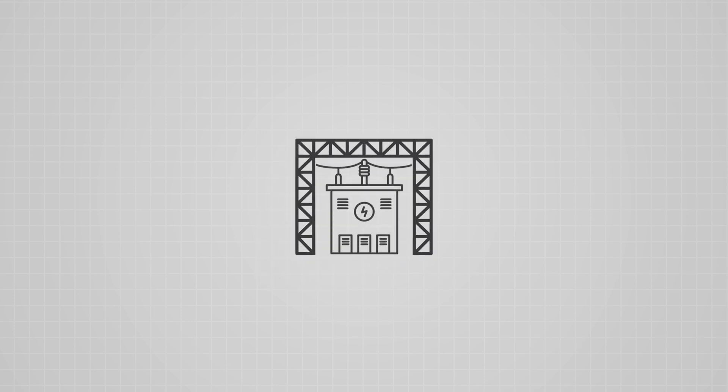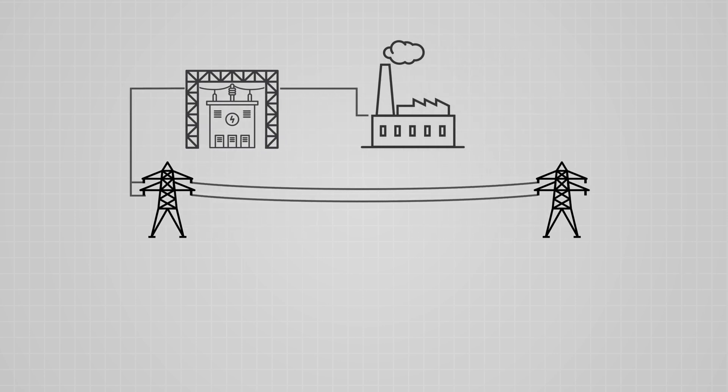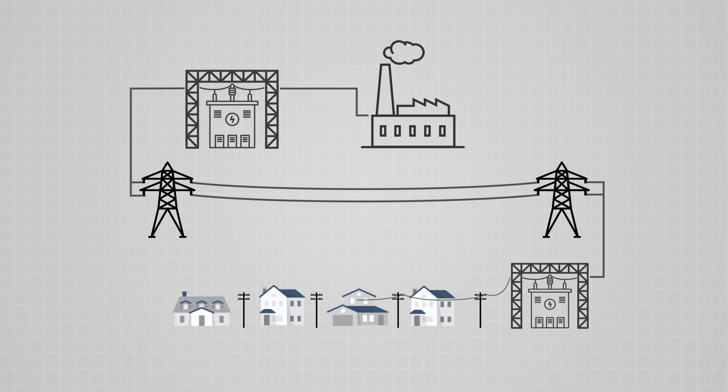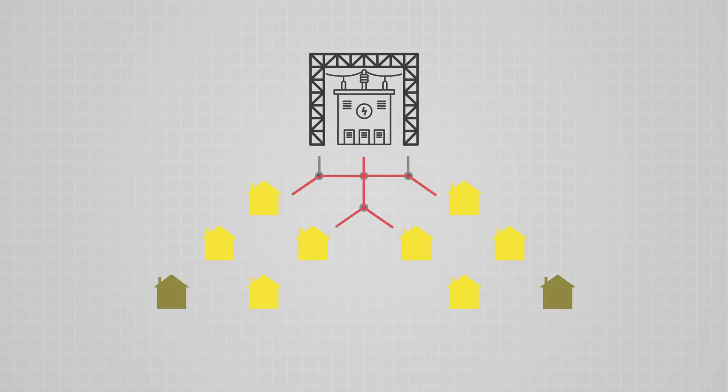Substations are important junctions in the system, where electrical voltage is increased to efficiently travel long distances, as we showed earlier, or decreased to serve customers at an appropriate voltage. The stepping up or stepping down of voltage is performed by equipment called transformers. The substations also contain equipment for switching and diverting power, as well as monitoring and protecting infrastructure. This equipment enables the grid to interrupt and reroute the flow of electrical current as needed, ensuring continuous service for the greatest number of customers, and protecting downstream infrastructure in the event of any equipment failure or system interruption.